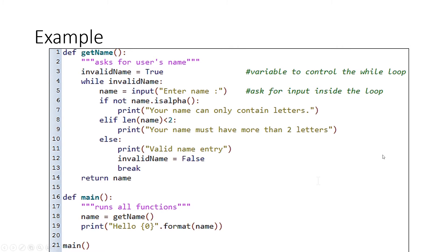Have a look at this example here. You start down at main, which calls the subroutine main. You know it's a procedure because it's not returning anything. A little doc string says it's running all the functions. First thing it does is call a function — you know it's a function because it's storing what comes back in the variable name. It's calling something called getName. In getName there's a little flag variable called invalid name, which is set as true.